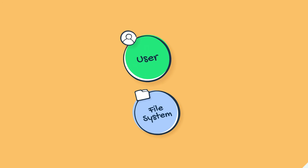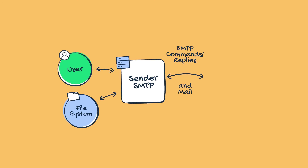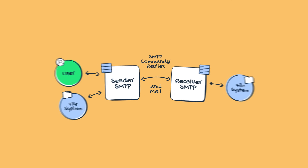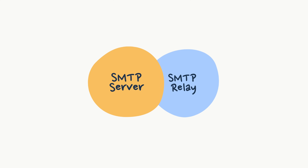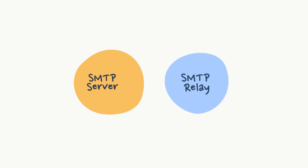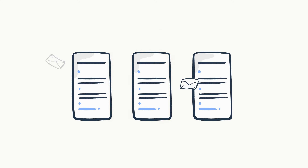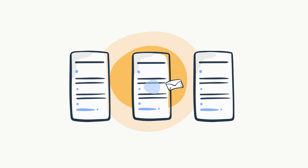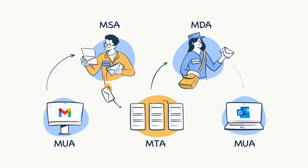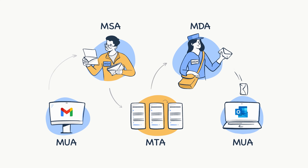Simple Mail Transfer Protocol is a common standard for mail servers to send and receive messages. You may have already heard of terms like SMTP Server and SMTP Relay, so let's differentiate between the two. An SMTP Server is an email server that uses the protocol to send and receive emails. SMTP Relay, on the other hand, is a process of transferring emails between SMTP servers hosted on different domains.